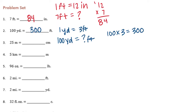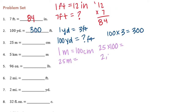25 meters is equal to how many centimeters? 1 meter is equal to 100 centimeters — think about a meter stick, there are 100 centimeters in a meter. So if we had 25 of those, we need to do 25 times 100, which gets us 2,500 centimeters.